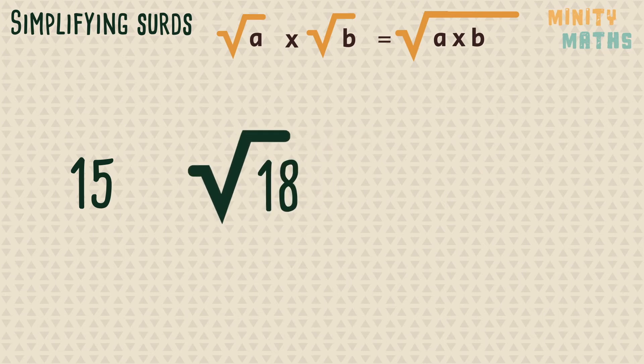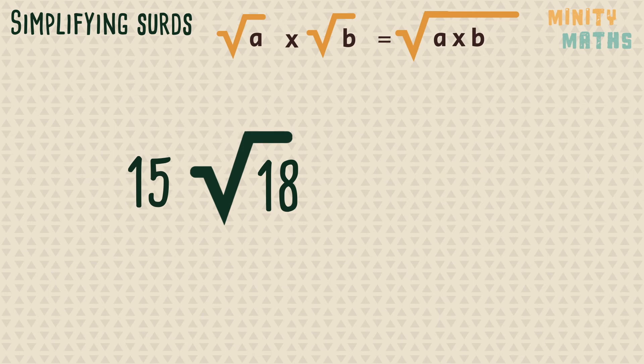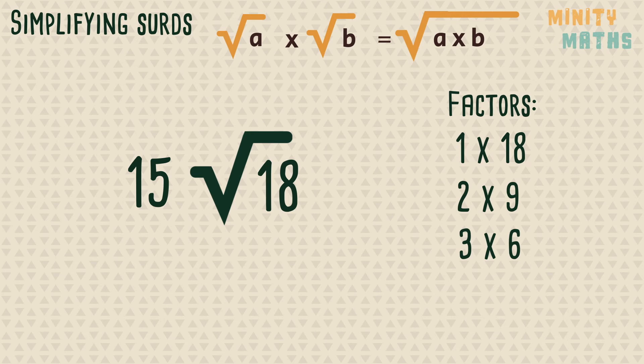But can we simplify this further? Thinking back to the previous rule, let's list the factors of 18 to check if this is in its simplest form. 9 is a perfect square, so we can use these two factors to rewrite the surd.